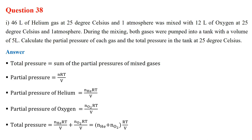For the partial pressure of helium, we use the number of moles of helium times the gas constant times temperature over volume. For oxygen, we use the number of moles of oxygen times R times T over V. Adding them, total pressure equals n(He)RT/V + n(O2)RT/V, which can be combined as (n(He) + n(O2)) × RT/V.